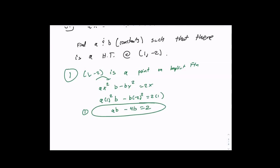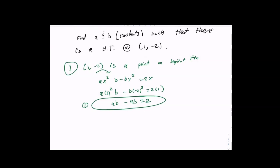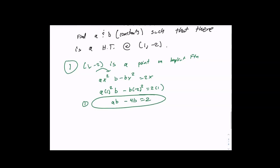I now have a relationship between a and b — and this is just advanced algebra. I didn't do anything calculus-based here. The point (1, -2) is on the curve, so I plugged x = 1 and y = -2 into the relationship between x and y and cleaned it up. I could probably solve for b, but we'll leave that there and see how it goes.